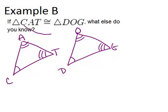So because C came first in the triangle on the left, it means it has to be congruent to D, which is the first letter for the triangle on the right. So C is congruent to D, A is congruent to O, and T is congruent to G.